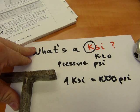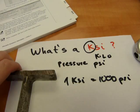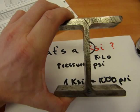Now you have it. So like I said, if you get PSI, you will get KSI, because a KSI is a kilo PSI — a thousand PSI. These numbers are often used to describe the strength of materials, such as concrete. I do have steel.